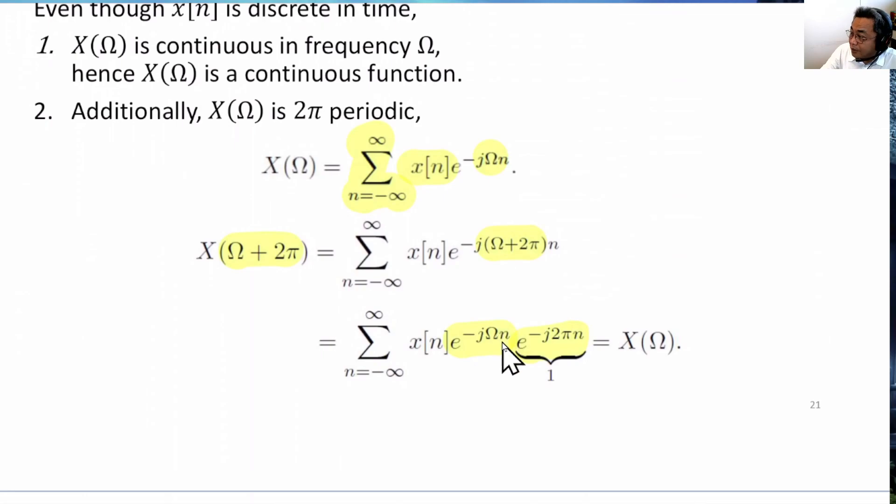e^(-jΩn) and e^(-j2πn). And remember that n is an integer. So e^(-j2π) times any integer 1, 2, 3 will result in the real value 1. And hence, this disappears, and we are left with the original equation here. And isn't this X(Ω)? And therefore, it proves that X(Ω) equals X(Ω + 2π).